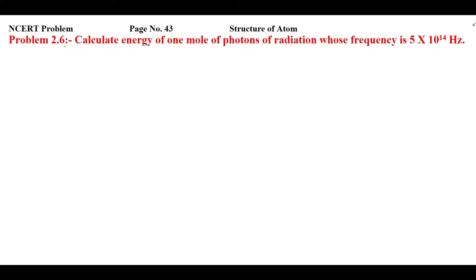Students, this is NCRT problem 2.6 from page number 43 of Structure of Atom. Let's read the statement: calculate the energy of one mole of photons of radiation whose frequency is 5 × 10¹⁴ Hz. We have a radiation with this frequency and we have to find the energy of one mole of photons. We will apply the unitary method.